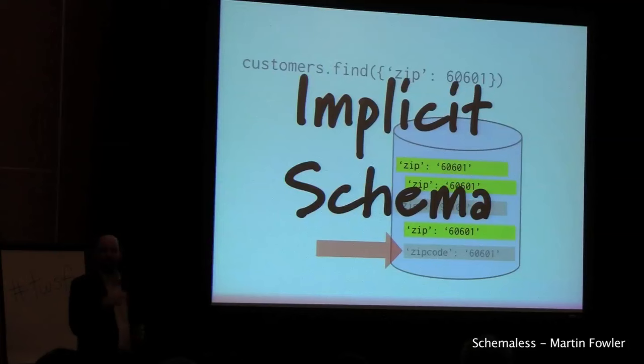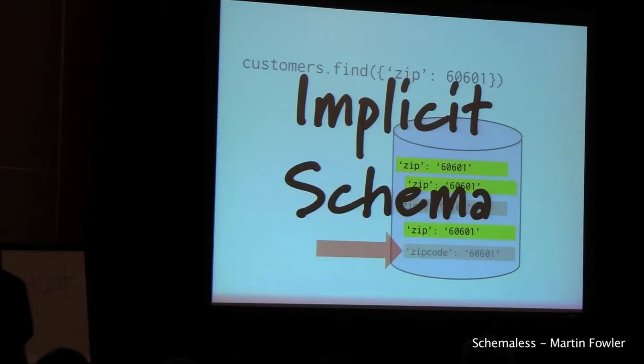The way I tend to think about this is: we may not have an explicit relational schema, but there's still an implicit schema. That implicit schema is how the code uses the data. If you're querying based on certain field names, that's effectively an implicit schema. And the implicit schema has a big effect on how you're going to use that data — you have to understand the implicit schema just as much as you have to understand an explicit schema with a relational database.